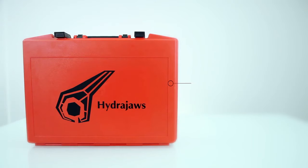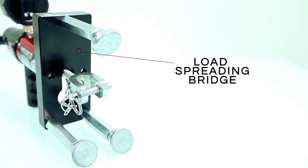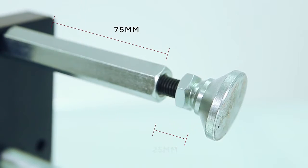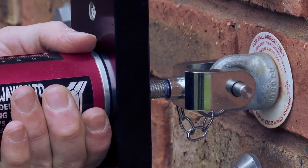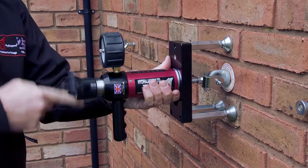Supplied in a robust carry case, it has a dedicated load spreading bridge with solid 75mm legs and 25mm of fine adjustment which allows testing of the unsupported area around the fixing.